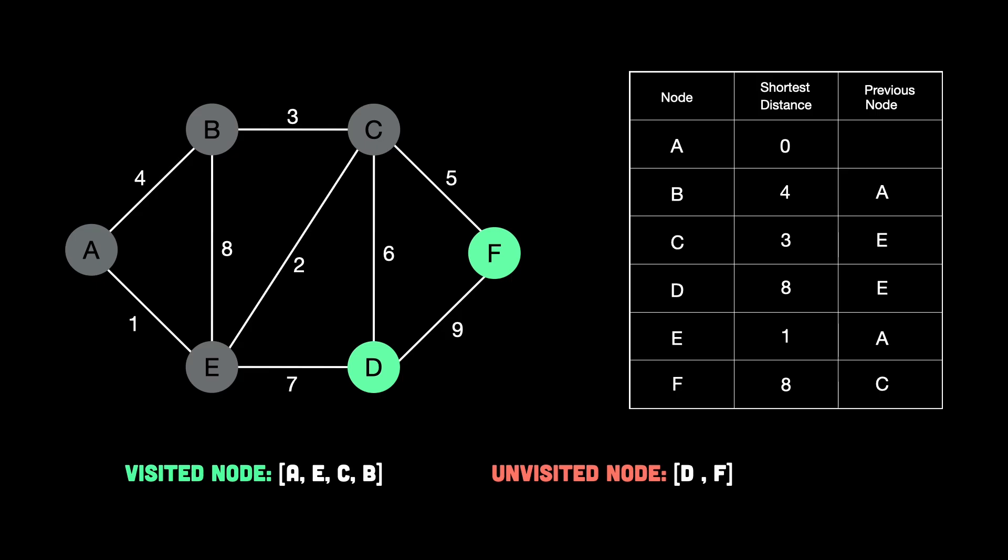But just to check, if we had picked D first, then the neighbors of D are E, C, and F. Since E and C are already visited, we can only go to F. Going from D to F costs 9. So total equals 8, which is shortest distance to reach D, plus 9, that's 17, which is worse than F's shortest distance of 8, so nothing changes. And we mark D as visited. So either way, shortest distance to F equals 8, which is final. So if we visit F, all other neighbors of F are visited. And the shortest distance to F is 8, as you can see in the table. So we can also mark F as visited now.